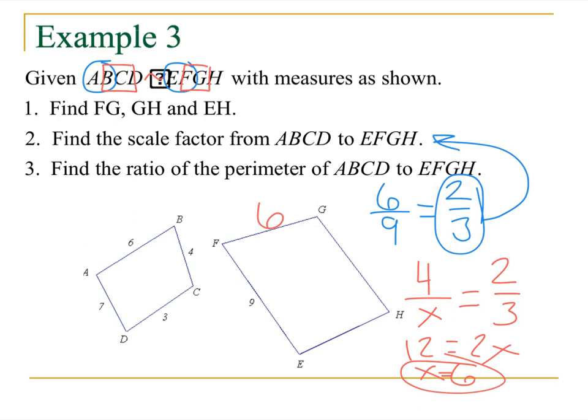GH, well, GH matches up with CD. And CD is three. So, three over X is equal to two-thirds, my scale factor. So, I get nine when I cross multiply equals two X. So, X equals four point five. Maybe I shouldn't use the same variable, but whatever. So, we get four point five for my GH.